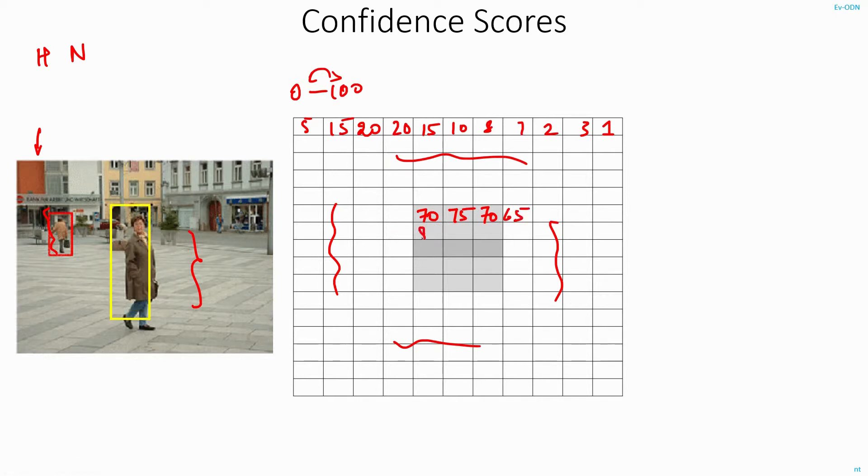One row down, it might increase to 80, then 85, then here it's around 80 and so on. So near the vicinity of this person, if you look at the confidence score table, it might look like this.